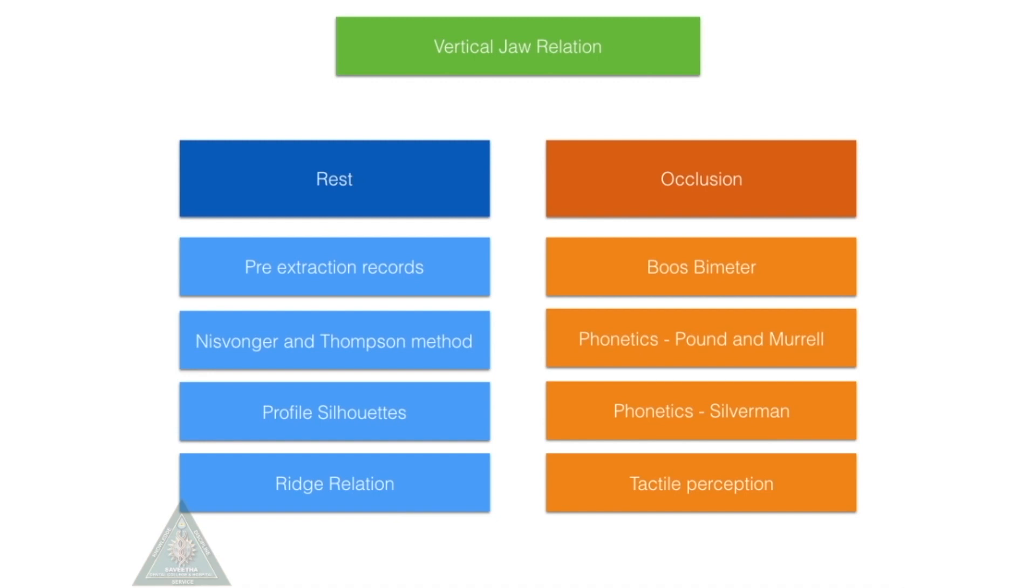Profile silhouettes is cutting a cardboard outline exactly to the patient's face and asking the patient to relax and then bite, so that you know how much of freeway space is reduced.